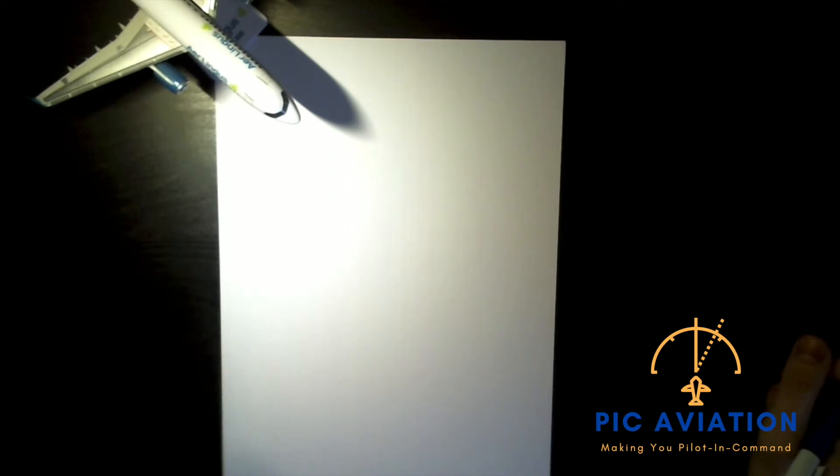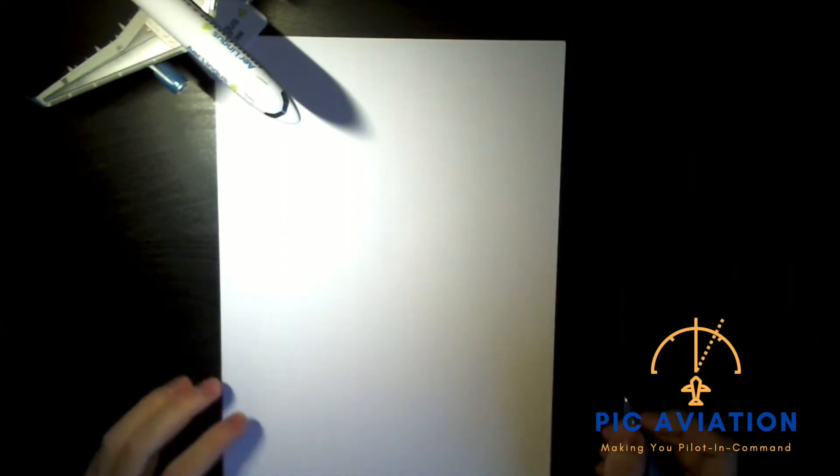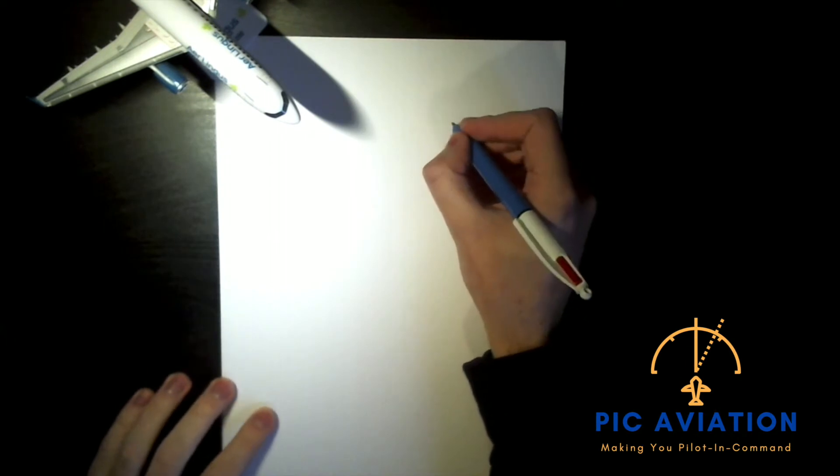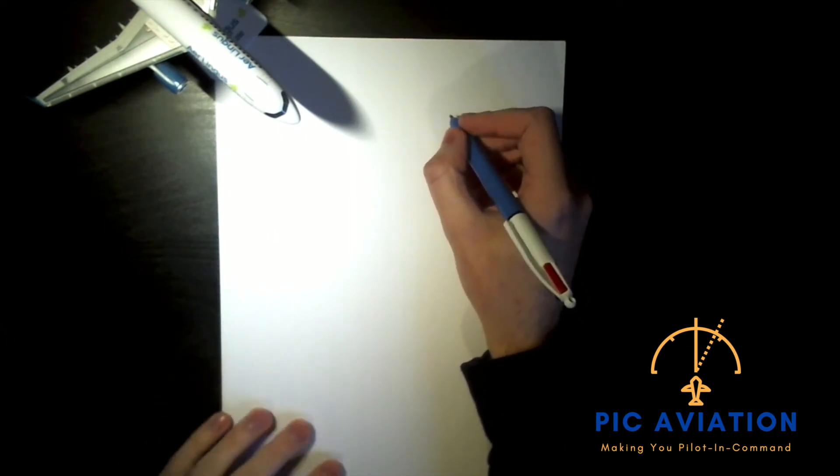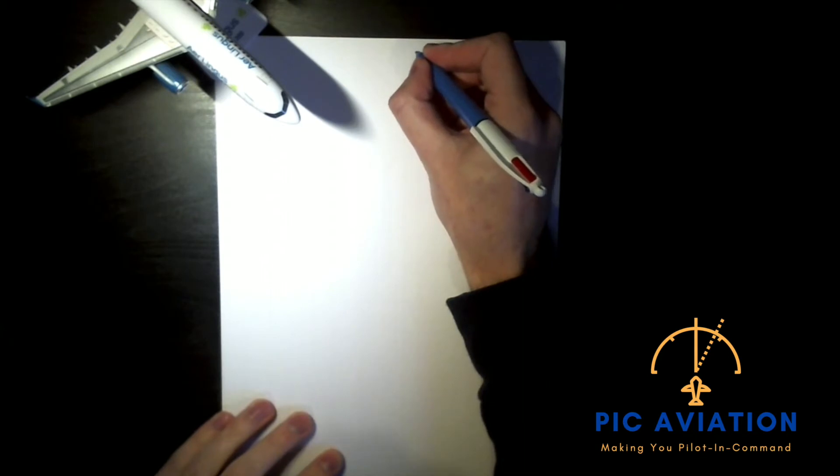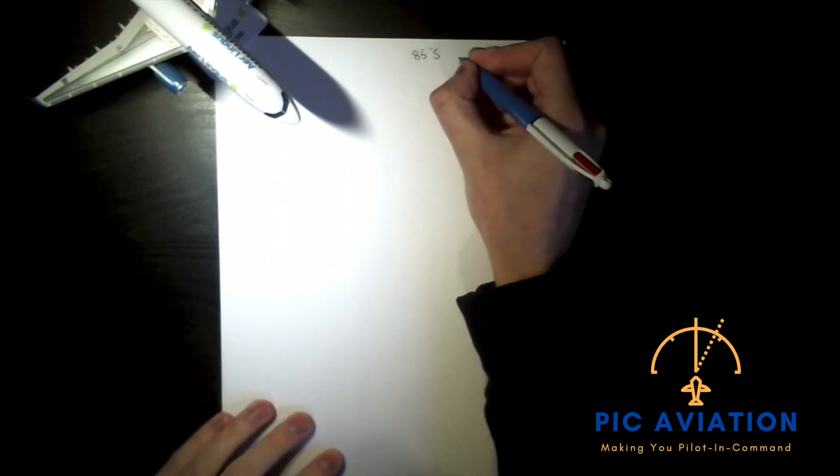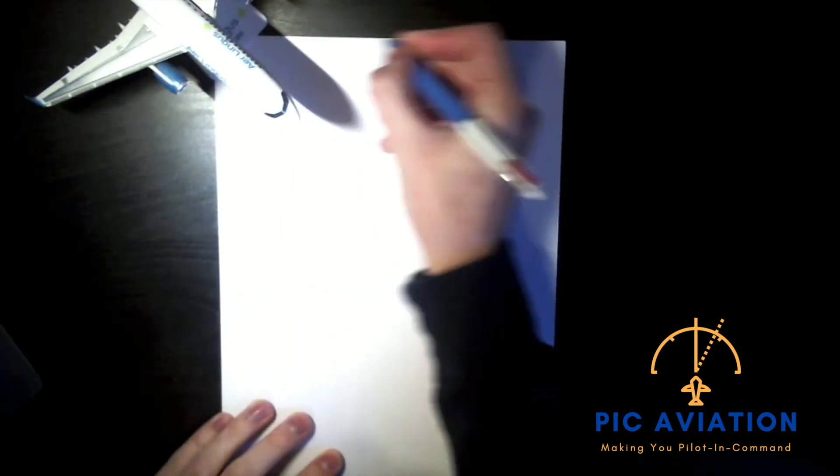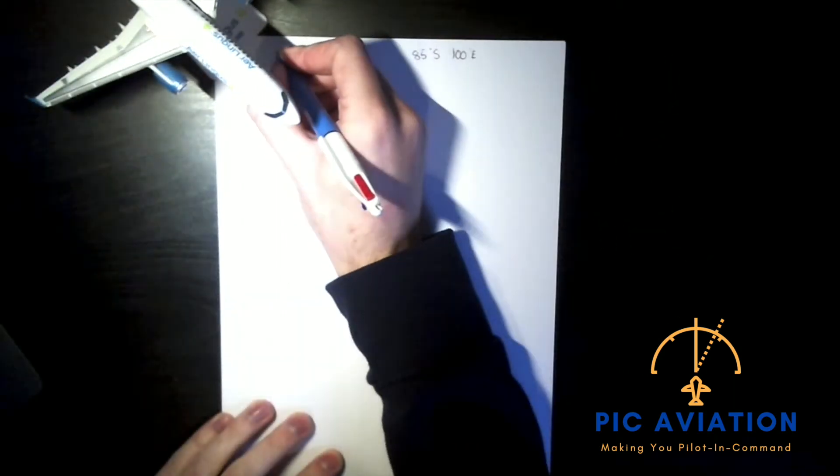A route is flown from 85 degrees south 100 degrees east to 85 degrees south 140 west. First of all, I think the question has been a little bit unfair in the sense that it's saying North Pole but then it's actually referring to the South Pole. So I'm going to note the South Pole. We're on 85 degrees south 100 degrees east and we're going to be flying westerly, so I'm going to draw it a little bit further across.